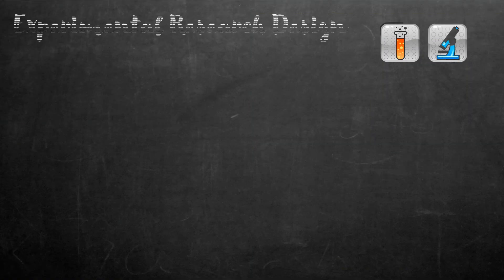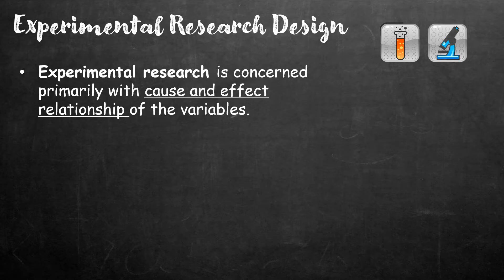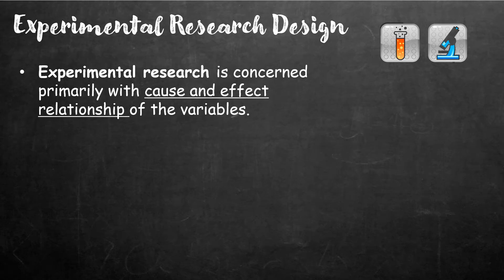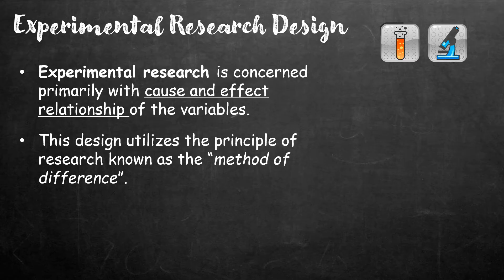Isang halimbawa ng quantitative research design ay ang experimental research design. Experimental research is concerned primarily with cause and effect relationship. Layunin ng experimental research na sukatin ang epekto at pagkakaiba ng mga variables sa pamamagitan ng manipulation or control sa mga ito. This design utilizes the principle of research, also known as the method of difference — ang pag-alam ng magiging epekto ng isang variable sa isang bagay at anong pagbabago ang maobserbahan.